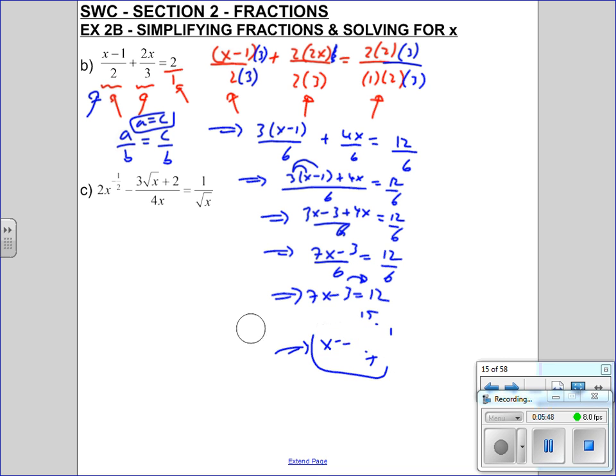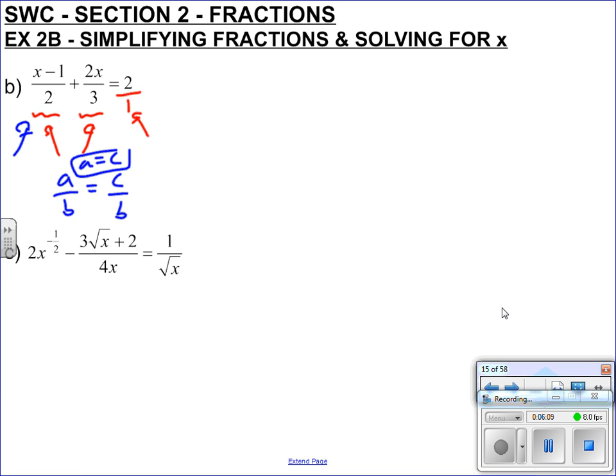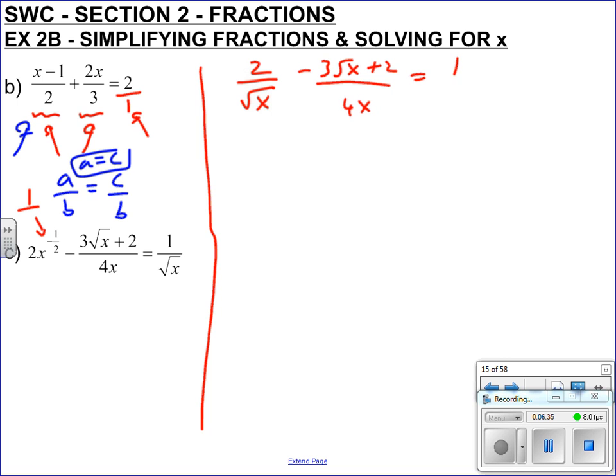Let's now look at part c. So part c looks a lot more complicated, doesn't it? You've got negative powers in there and all this kind of thing. Any time I'm going too fast, obviously just stop the video and backtrack. 2x to the minus a half, what does that mean? Well let's get that in fractional form. We know that a minus in the power means 1 over, and the half means square root. So 2 over square root x minus 3 root x plus 2 over 4x, 1 over root x.